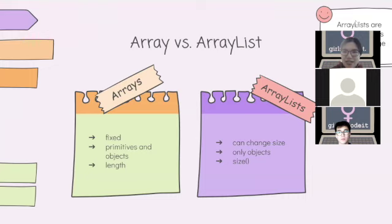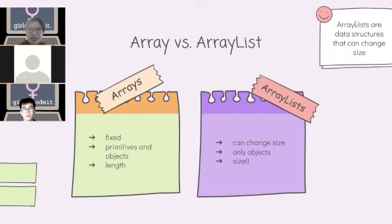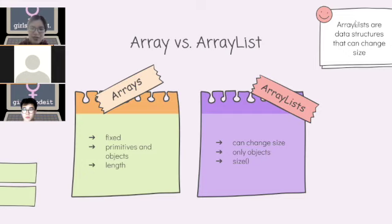First off, we're going to go over the difference between arrays and ArrayList. Arrays and ArrayList are basically stored differently in memory. Arrays are fixed size — they can store primitives and objects, and you can see the size through a field called length. ArrayList, on the other hand, can basically have elements added and removed, so they can change in size. They store only objects and you can find out how big they are through the size method.